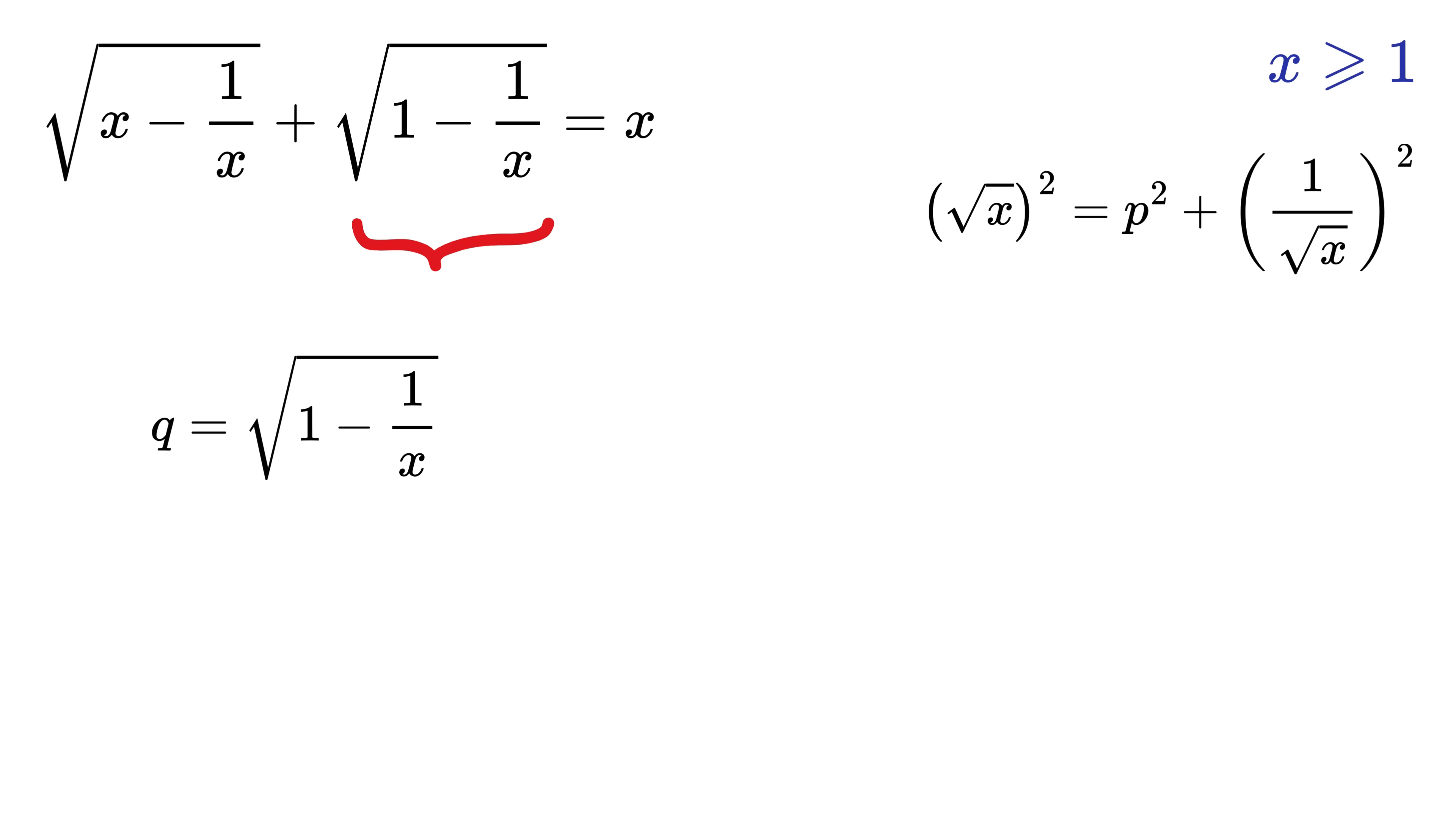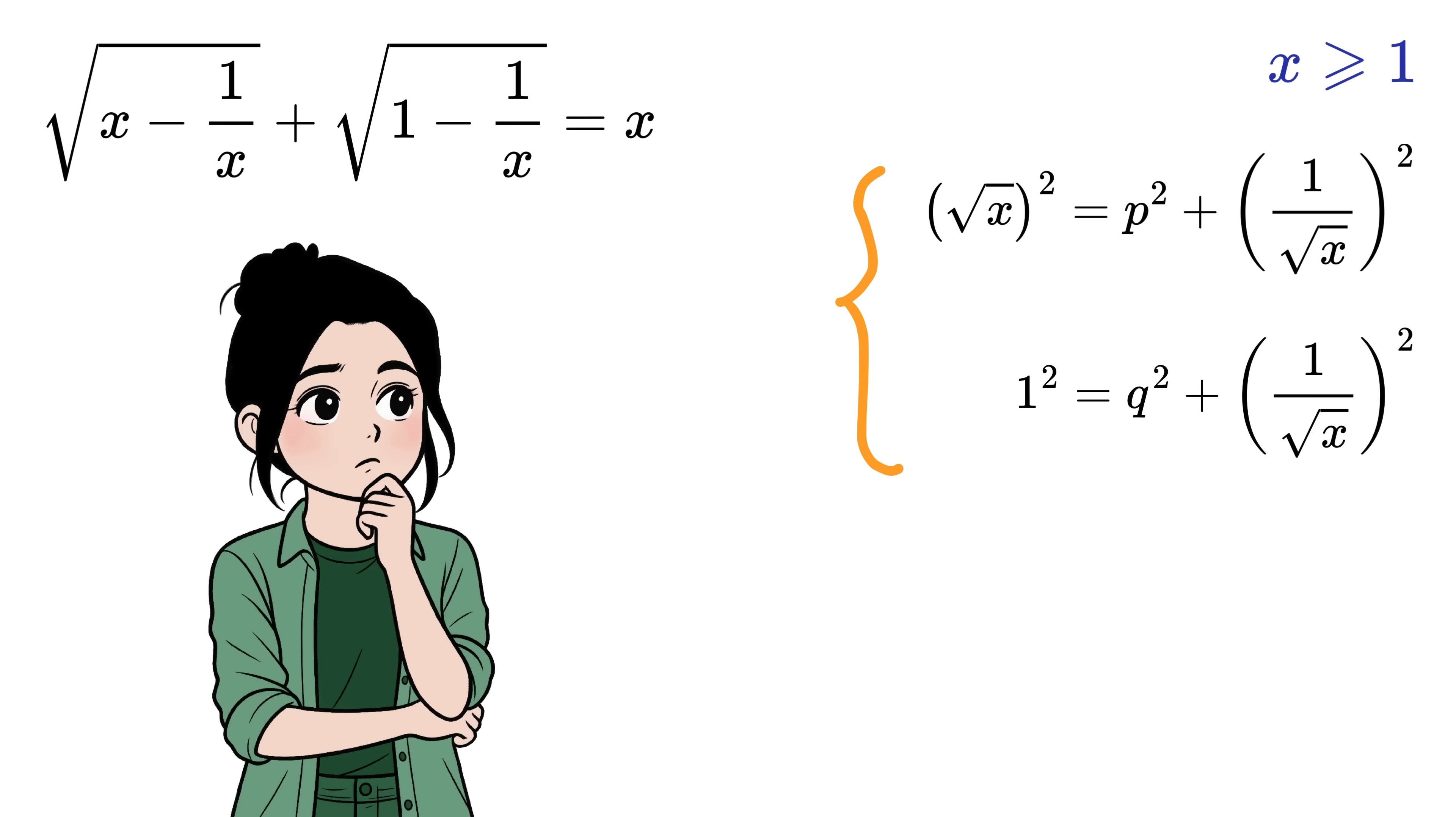Now, let us call this thing as q, and just square on both sides to get q square as 1 minus 1 over x. Take this here, and thus we get 1 equals q square plus 1 over x. We can also rewrite this one as 1 square and this one over x as 1 over square root of x whole square, right? Noice. Hey, can you notice some kind of pattern here?